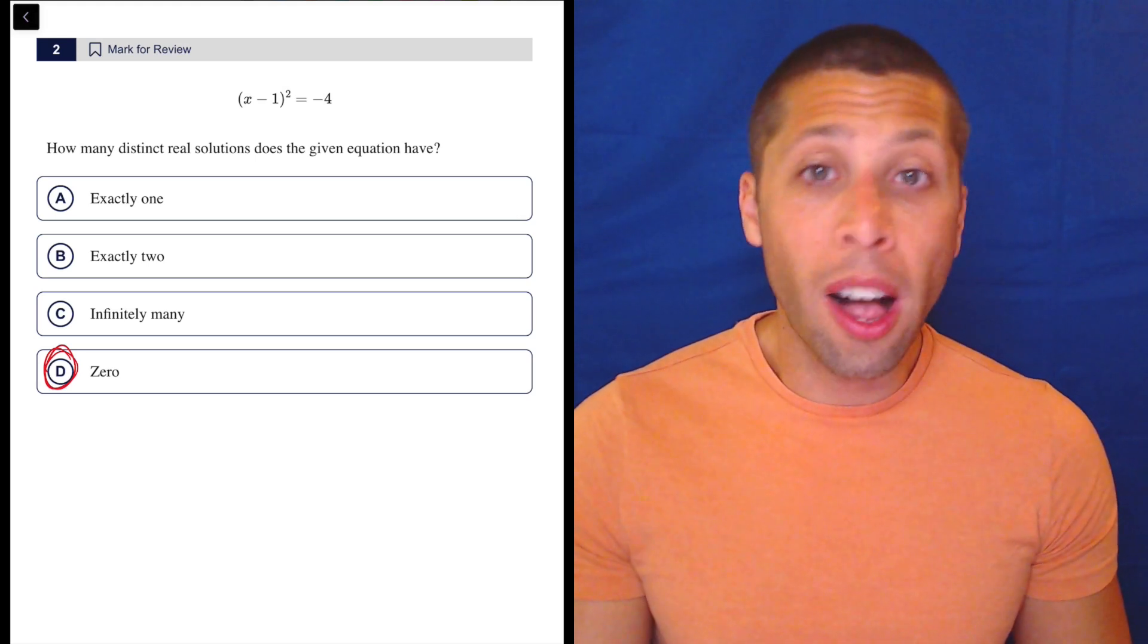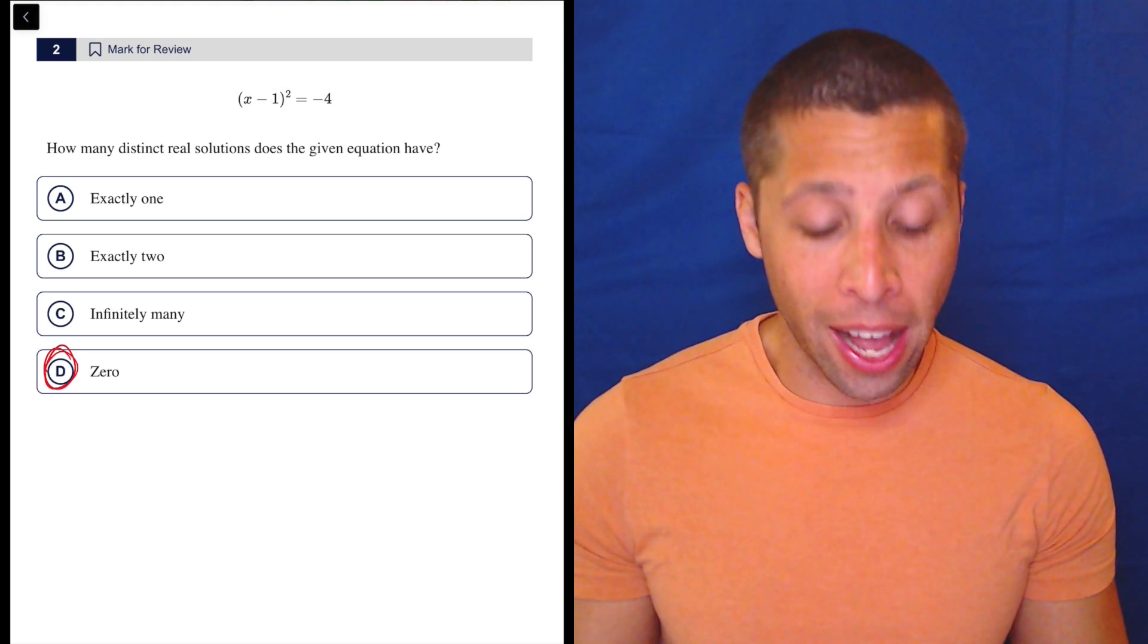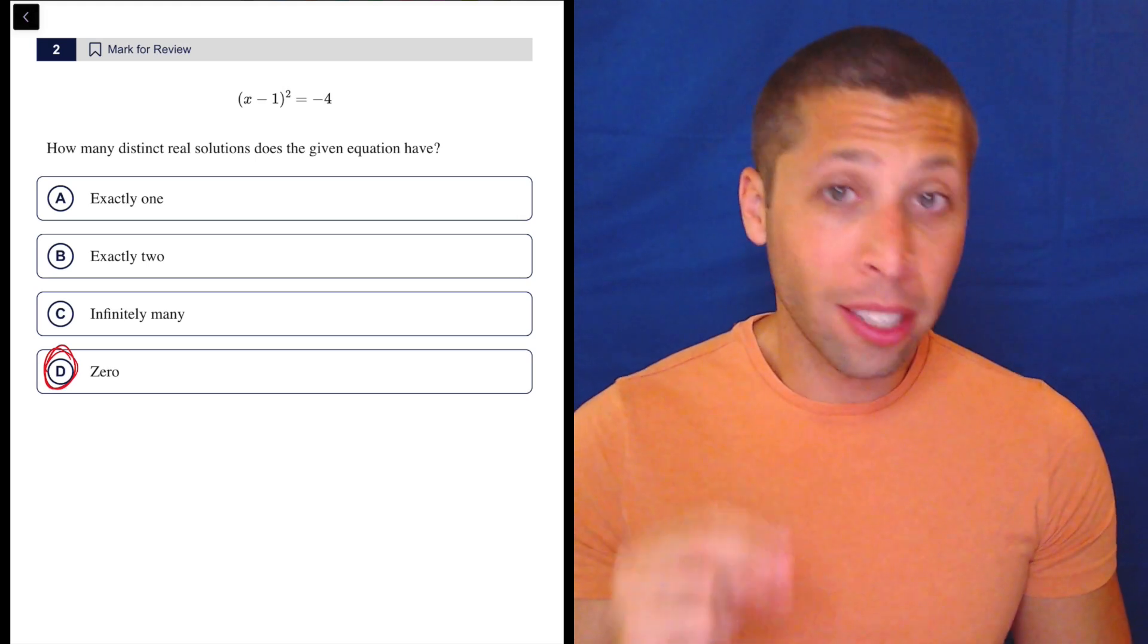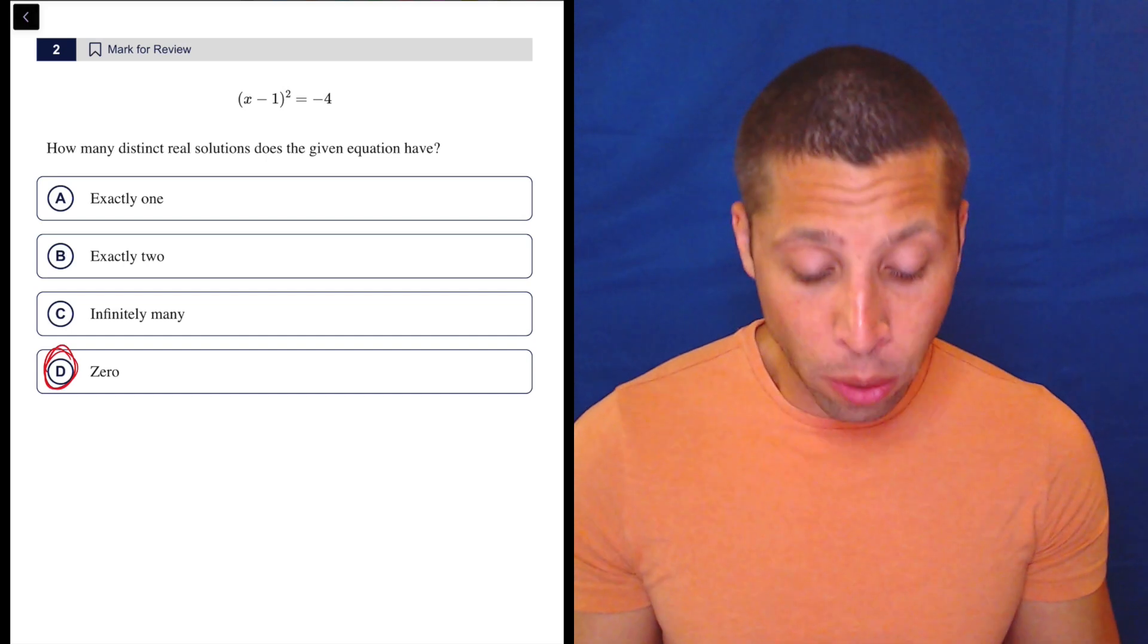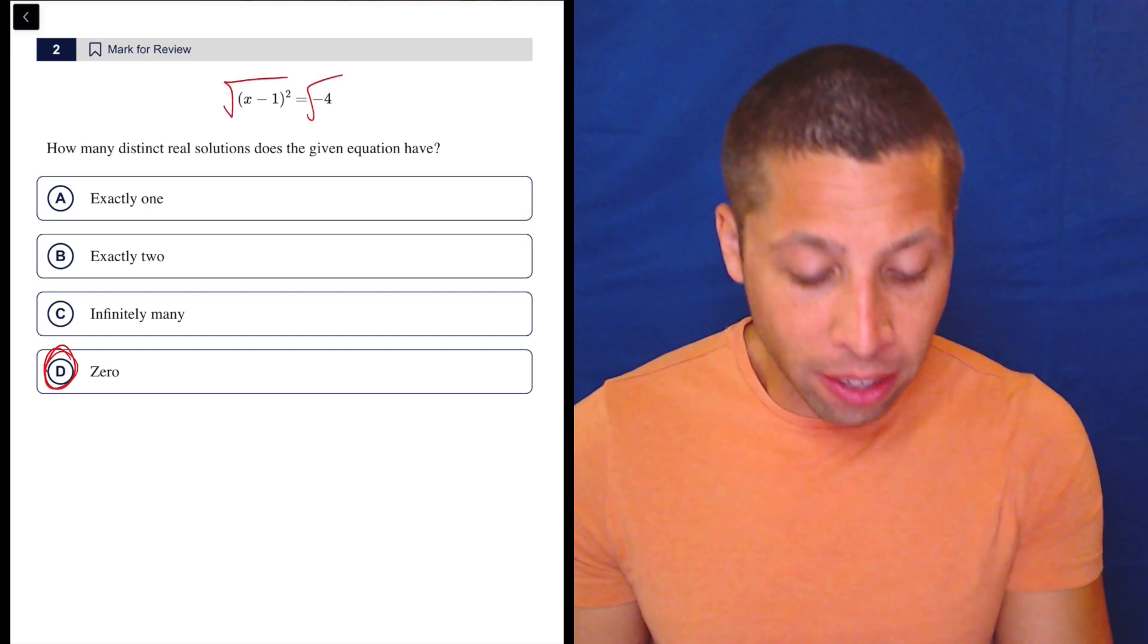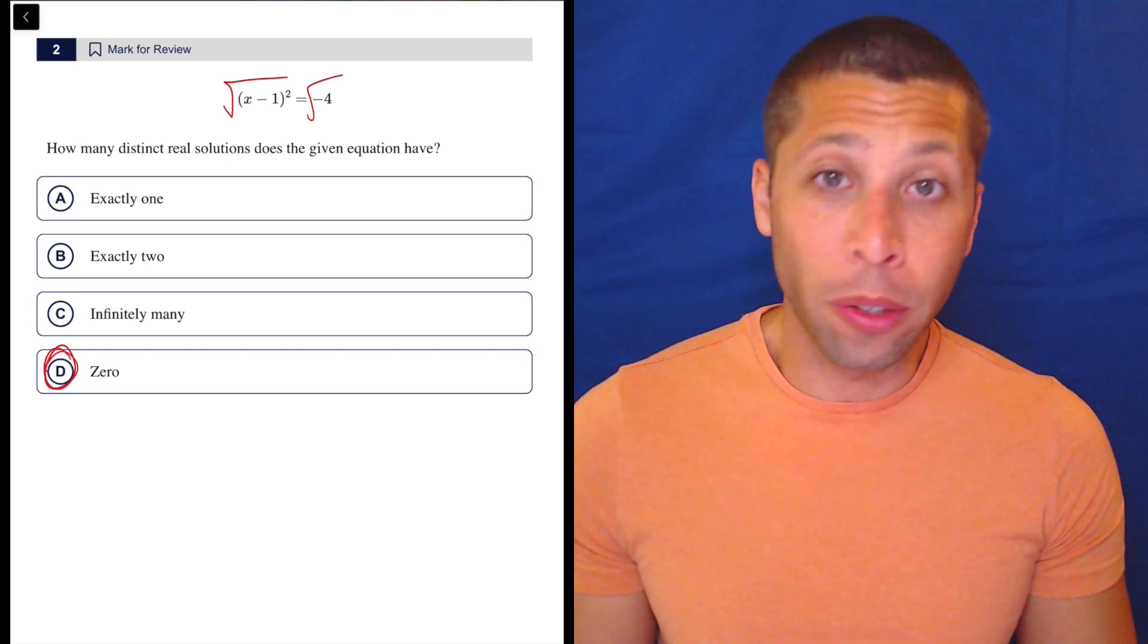So if we were to solve this thing, if we were trying to solve for x, we don't actually want the value of x. We just want to know how many values there are, but if we tried to solve, we would hit a problem right away. We would take the square root of this side to get rid of the square, and then if we did that on this side, well, we've got a problem. You can't take the square root of a negative.